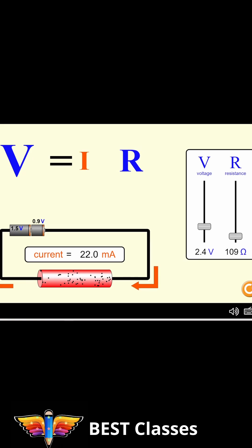You can see the current over here. How much is the current? 22 milliamperes, and the voltage we have is 2.4 volts.